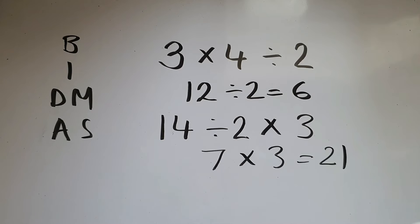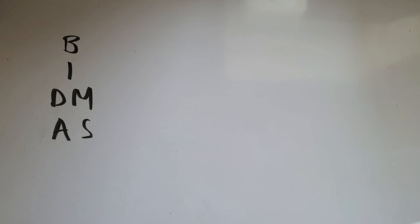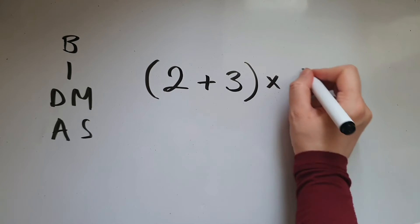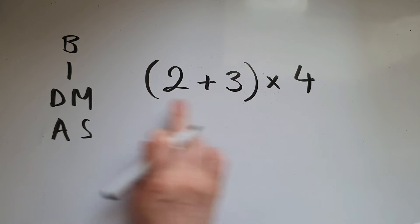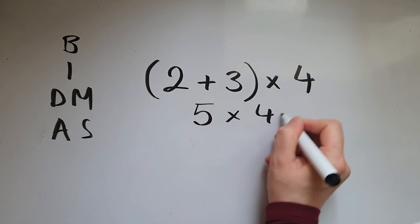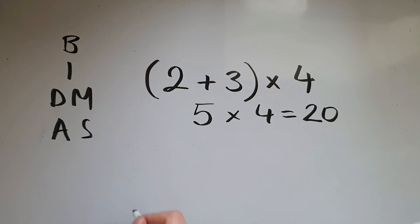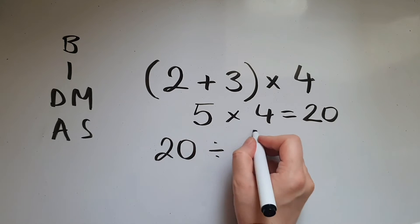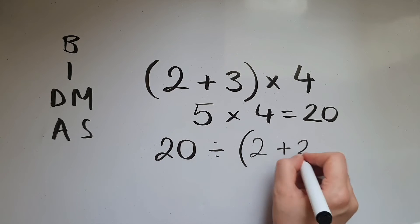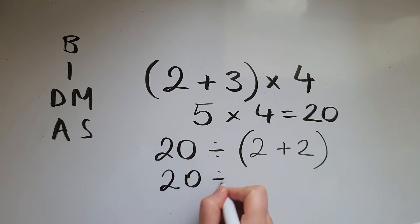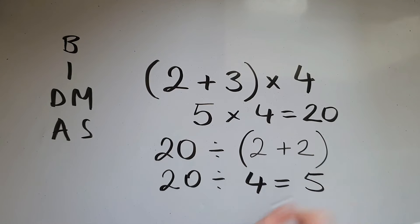Let's have a look at some other cases. As you can see, we've got brackets going first, and then multiplication. So 2 add 3 is 5, times 4 is 20. Now if I have 20 divided by 2 add 2 in brackets, I'm going to have to do the brackets first. So 2 add 2 is 4, and 20 divided by 4 gives the answer 5.